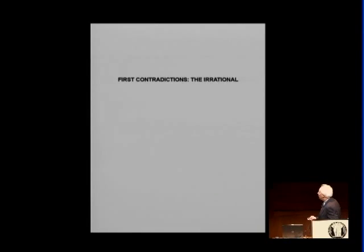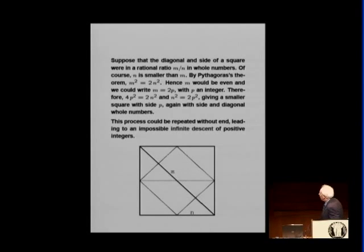So, the life of mathematicians there was not necessarily the easiest. So, here is how the irrational was discovered. If you have a square, and the side and the diagonal are in a rational ratio.